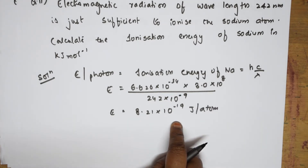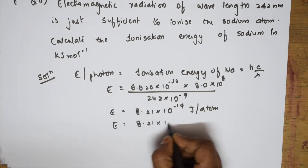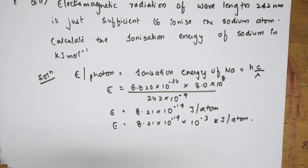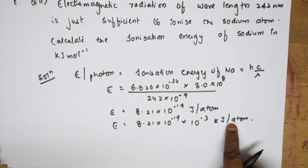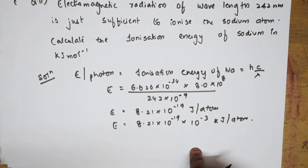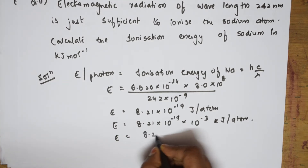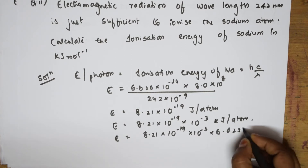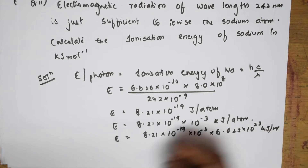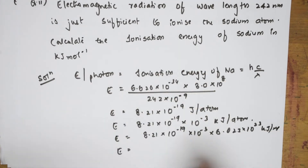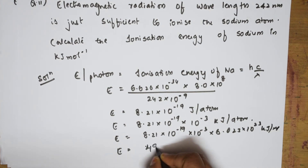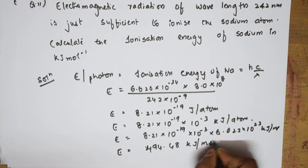Now, to convert into kilojoules, multiply by 10⁻³ — this becomes kilojoules per atom. To convert into kilojoules per mole, multiply by Avogadro's number, 6.023 × 10²³. The final answer is 494.48 kilojoules per mole. First I got joule per atom, then multiplied to get kilojoules per atom, then multiplied by one mole to get kilojoules per mole.